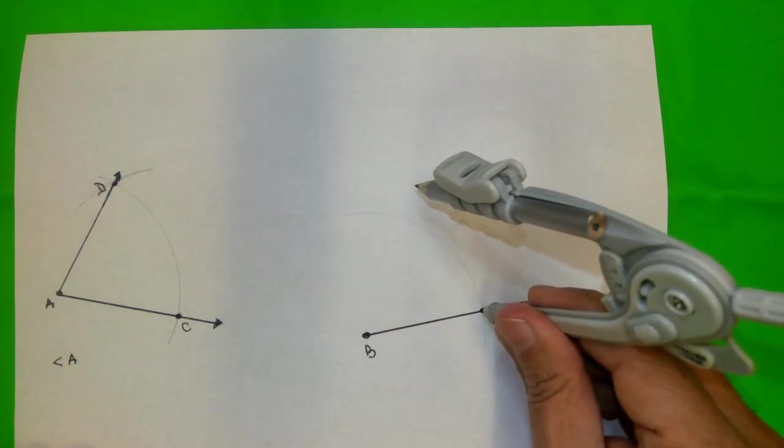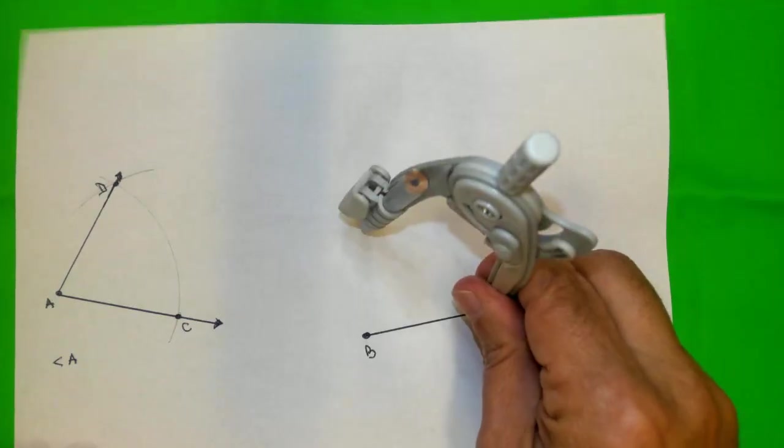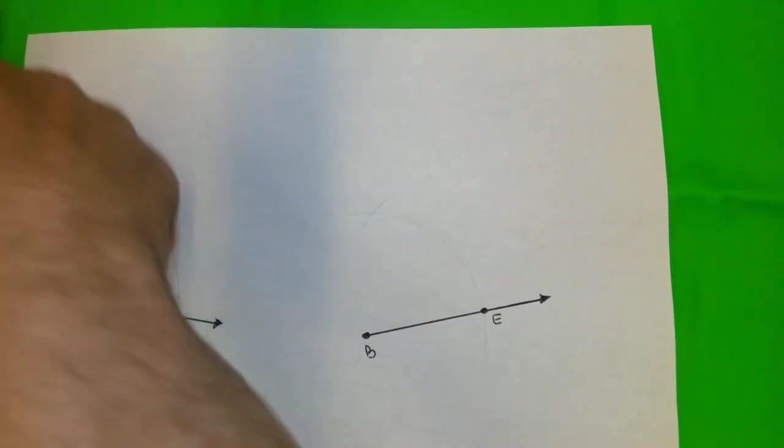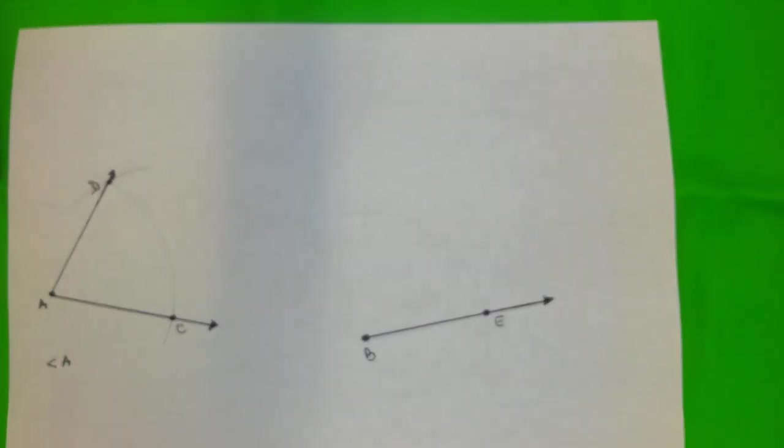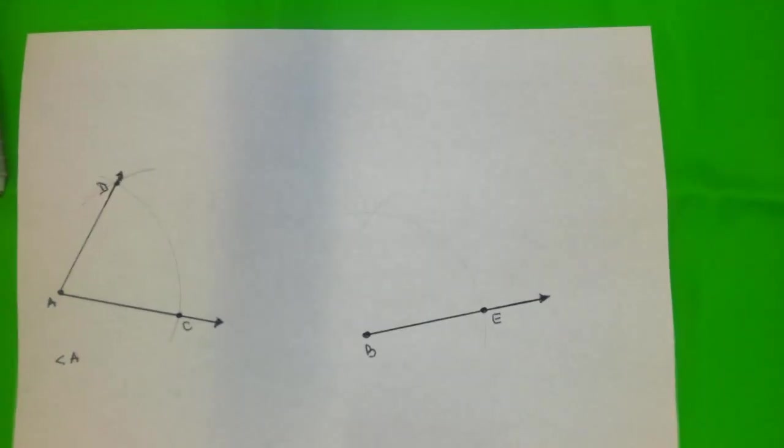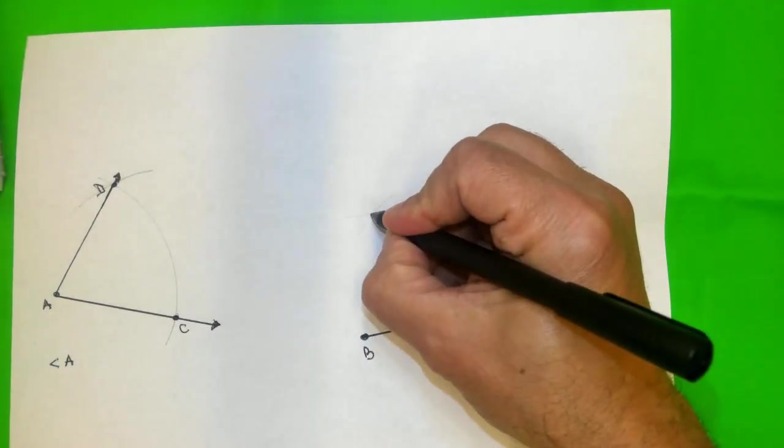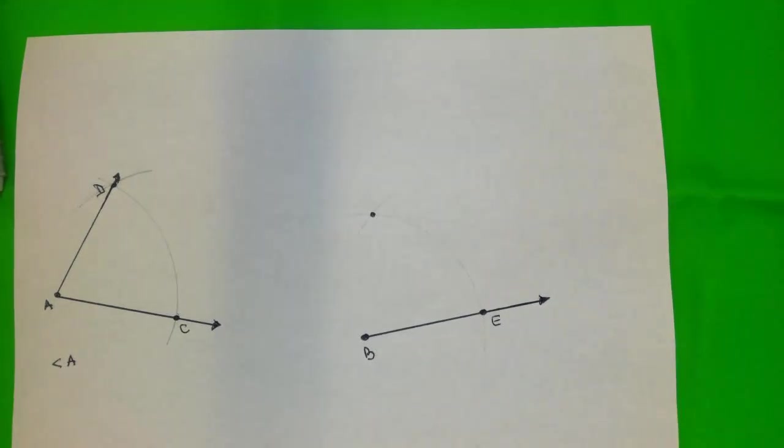Now, I'm going to go in point E, and I'm going to do the same thing. Now, we have this point, which is the corresponding point for point D. This one here. Let's call it F.